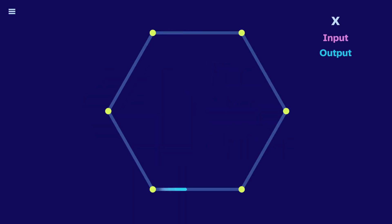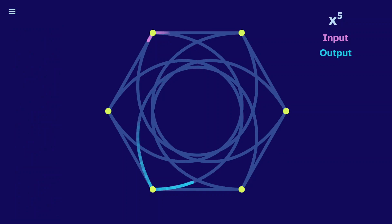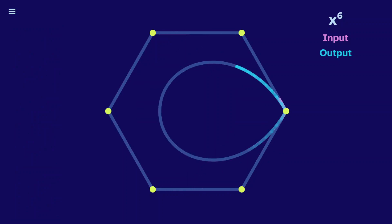Here is a hexagon. If we square it, it goes to every second point, which means half of the points get skipped. And a hexagon to the third just jumps back and forth between these two points. A hexagon to the fourth skips half, to the fifth hits every point, and to the sixth it just repeats that starting point.